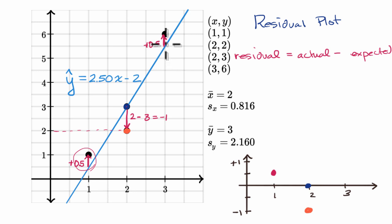And then this last point, the residual is positive 0.5. So it is just like that. And so this thing that I have just created, where we're just seeing for each x where we have a corresponding point, we plot the point above or below the line based on the residual. This is called a residual plot.